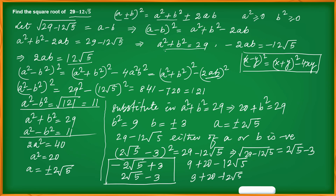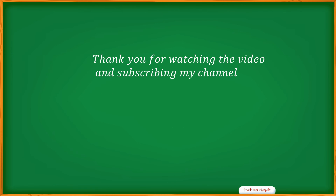Note: we could also take a squared minus b squared as negative 11. In that case b squared would be 40 and a squared would be 9, but ultimately we get the same result. Thank you for watching the video and subscribing to my channel — keep on watching!